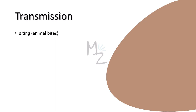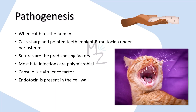Regarding pathogenesis — cats have sharp and pointed teeth, and Pasteurella multocida is found in their normal mouth flora. When a cat bites a human, its sharp, pointed teeth implant Pasteurella multocida under the periosteum. Now, the periosteum is located beneath the skin — the skin has three layers: epidermis, dermis, and hypodermis (subcutaneous tissue).